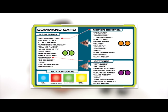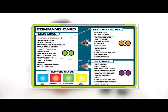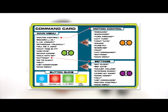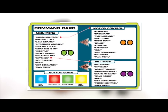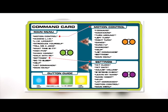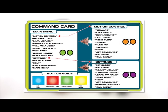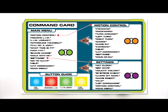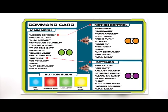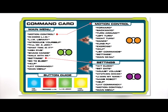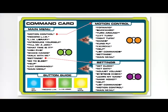Now we'll walk you through the Command Card. The Command Card will give you voice command tips, and it also has a Mechabrain button guide to help you program with the Mechabrain. Voice commands are grouped into three sections: 1. Main Menu, 2. Motion Control, 3. Settings. Through each section, you can access different voice command features. Keep this card with you so you can explore all of Mechanoid's voice commands.